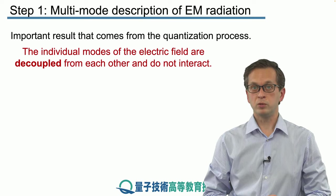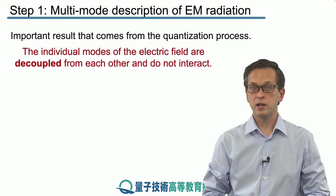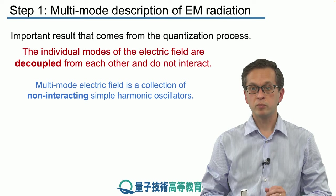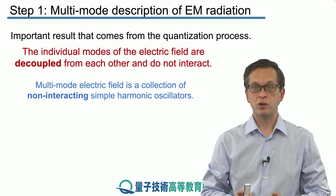We know that a single mode of electromagnetic radiation can be modeled as a simple harmonic oscillator. That means that since these modes do not interact, we can write down the multimode electric field as a collection of non-interacting simple harmonic oscillators.